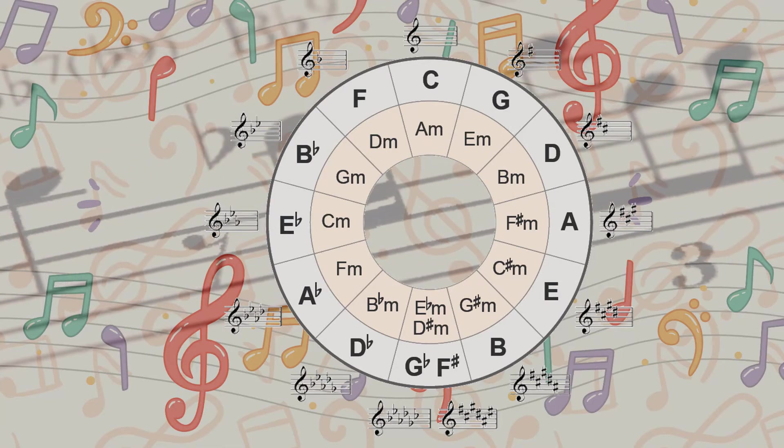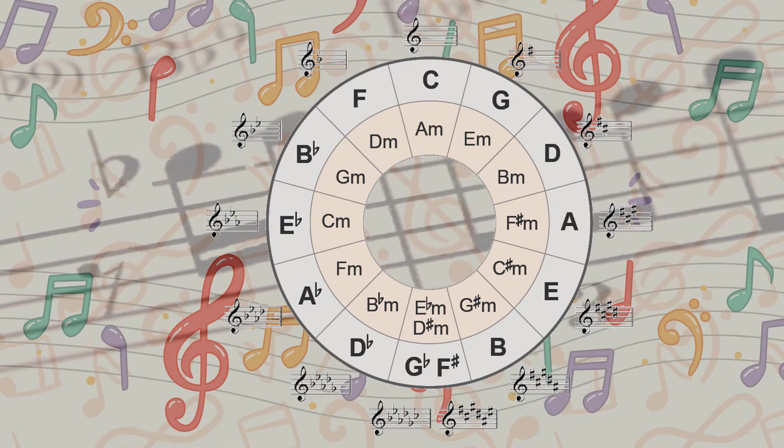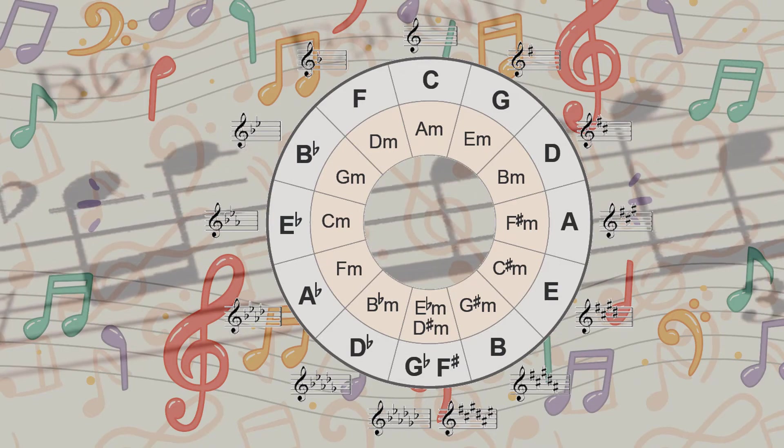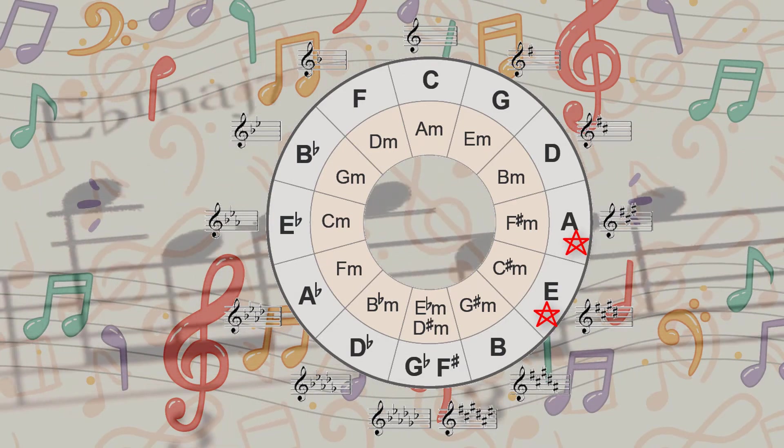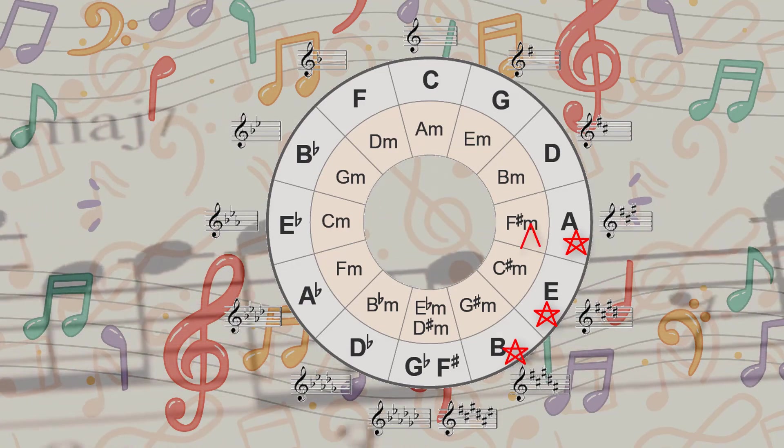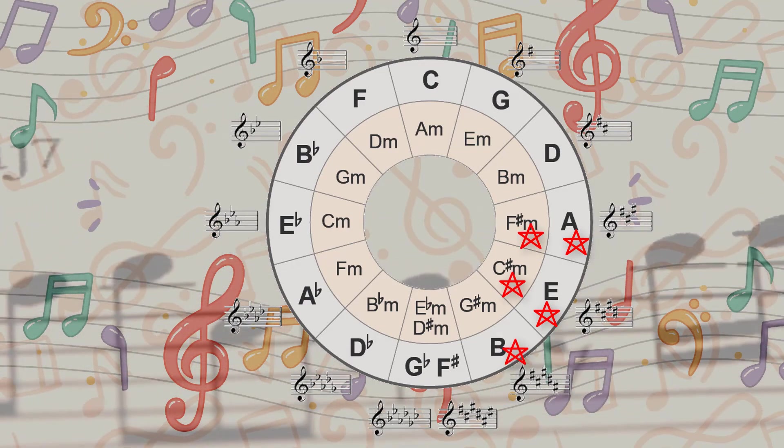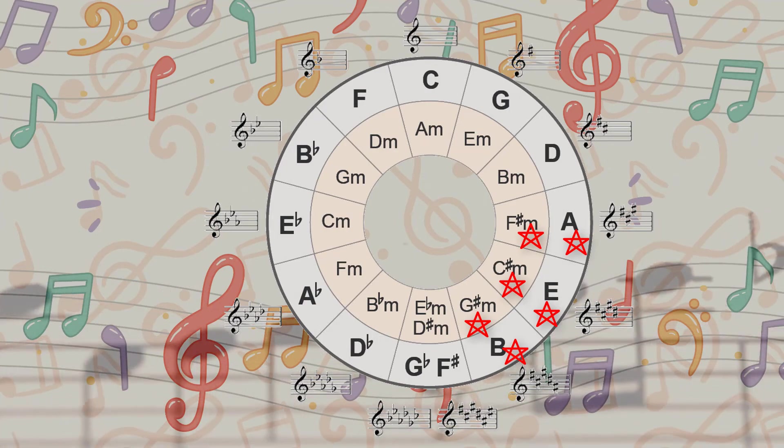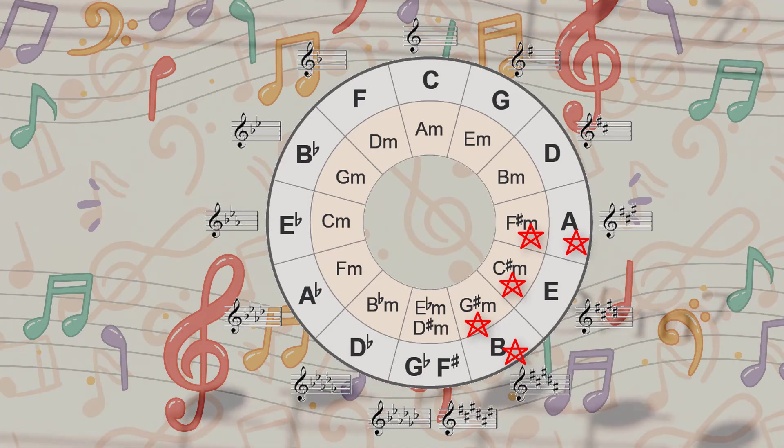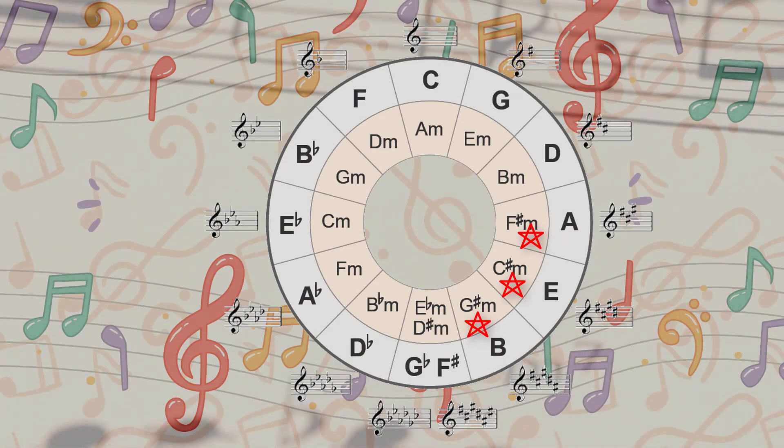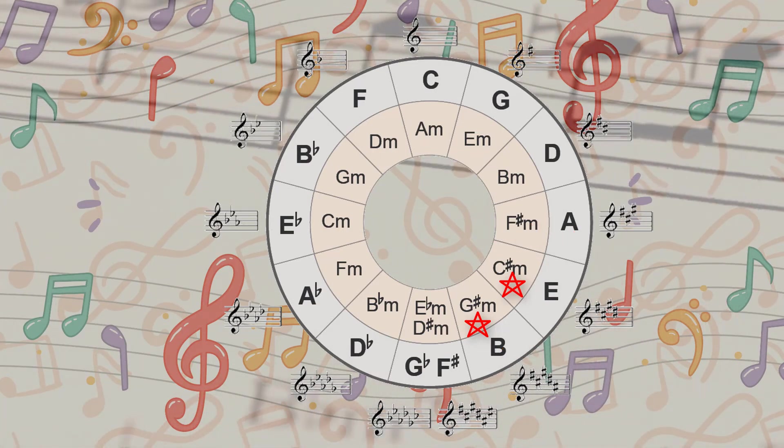If for example we're writing a song in the key center of E, the six most used and likely chords would be E, of course, and its five closest neighbors would be A, B, F sharp minor, C sharp minor, and G sharp minor. And if you're trying to figure out the chords to one of your favorite songs, start by identifying which key it's in and then try using the neighboring chords found in the circle of fifths.